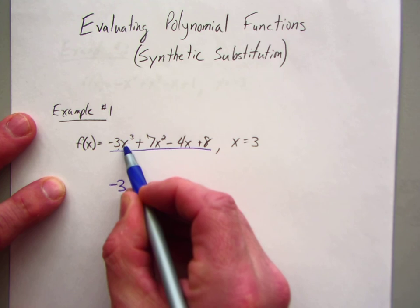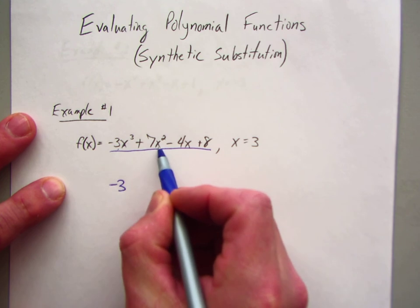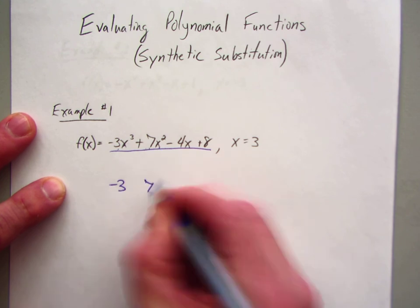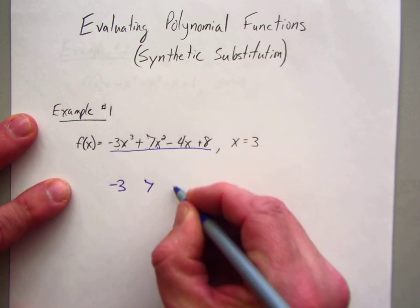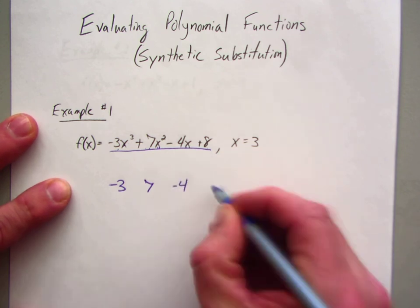Then, so this is a cubic term, so then you have a quadratic term, which the coefficient is 7. After the quadratic term comes a linear term, which is negative 4, and then the constant.